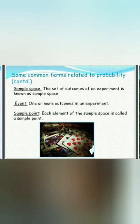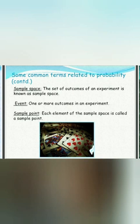Let me explain a few more common terms related to probability. The first one is sample space — the set of all outcomes in an experiment. For example, if you throw a die, you may get 1, 2, 3, 4, 5, or 6. All these possible outcomes together make the sample space, always denoted by the capital letter S. An event is one or more outcomes in an experiment. Each element in the sample space is called a sample point. If you throw a single die, the outcomes 1, 2, 3, 4, 5, 6 together form the sample space, and each individual outcome is a sample point.